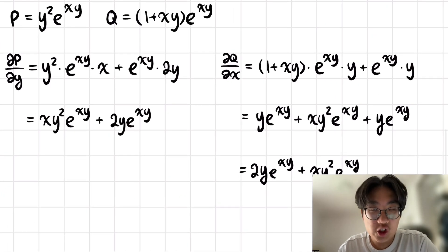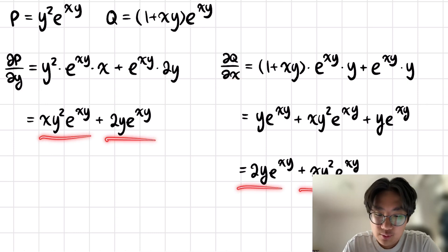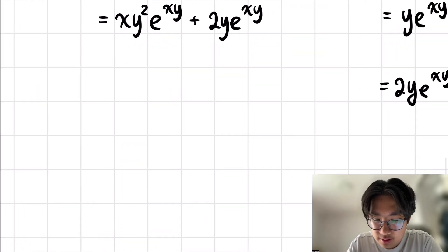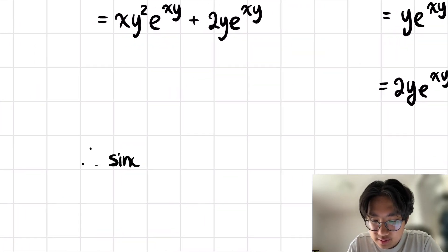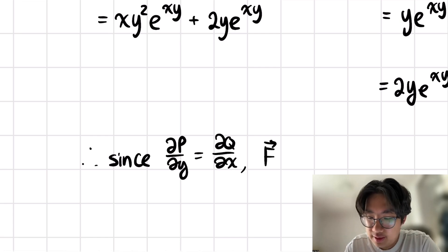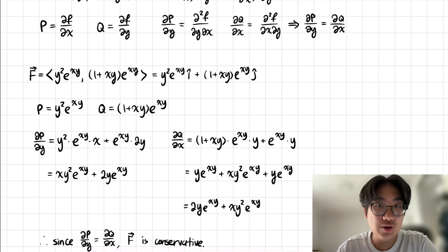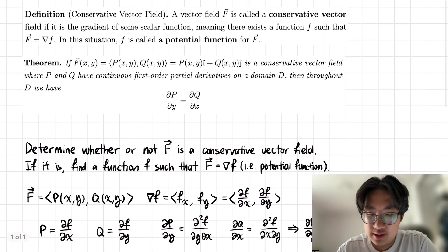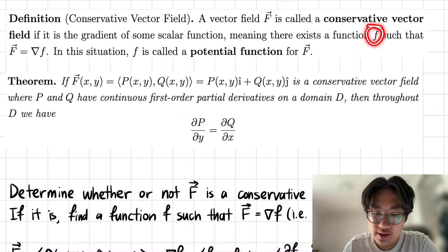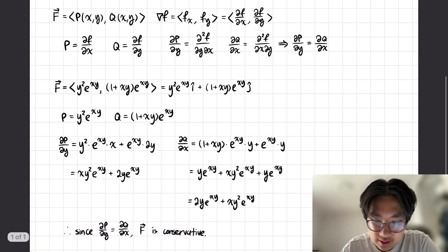We have computed both partial derivatives. Comparing them, we see they are indeed equal. Therefore, since partial P partial y is equal to partial Q partial x, we can conclude that F is conservative. So that's the first part — we've determined it is conservative, meaning we now want to find a potential function f such that big F equals the gradient of little f.